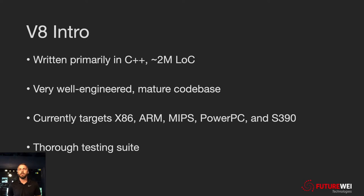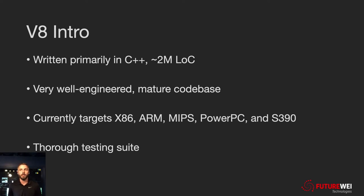A bit of an intro about V8 itself: it's written primarily in C++. It's about 2 million lines of code — most of that is C++, with a decent chunk also being JavaScript, and various other languages mixed in. It's a very well-engineered, mature codebase. Getting started in a big existing project can sometimes be a terrible experience, but the design and architecture behind V8 is really nice. They do a great job of containing all the target-specific code and keeping most of the code target-independent. They are currently targeting x86, ARM, MIPS, PowerPC, and S390 — and soon RISC-V.